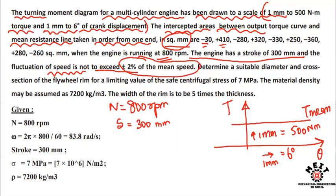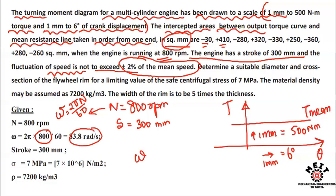The mean angular velocity in radians per second: omega is equal to 2π×n divided by 60. With n equal to 800 RPM, this gives 83.8 radians per second. This is the mean speed value.